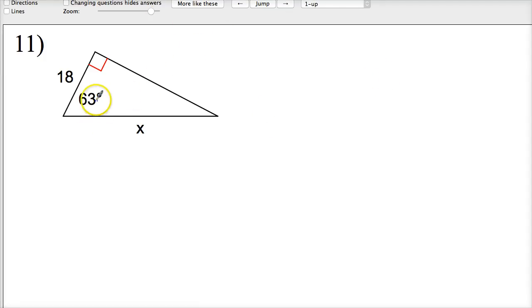In this one, here's my angle. It's not the opposite side. So this is an adjacent over hypotenuse. So, this is a coat and hat situation. The cosine of 63 degrees equals the adjacent side, 18, over x.